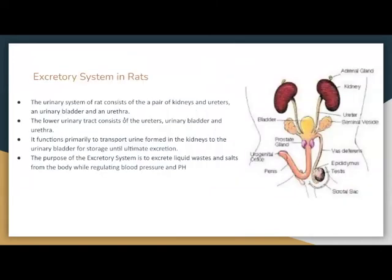The excretory system of rats. The urinary system contains a pair of kidneys, the ureters, a urinary bladder, and a urethra. The lower urinary tract consists of the ureters, urinary bladder, and urethra, and functions primarily to transport urine formed in the kidneys to the urinary bladder for storage until excretion. The purpose of the excretory system is to excrete liquid waste and salt from the body while regulating blood pressure and pH.